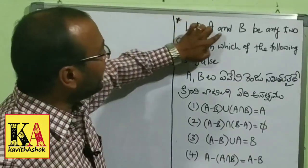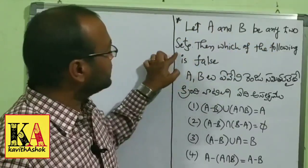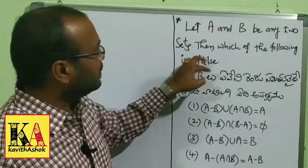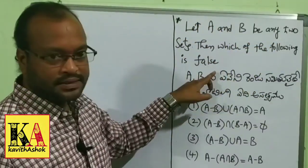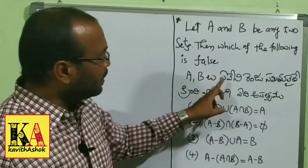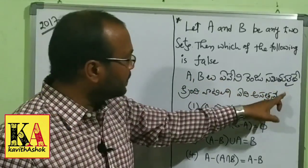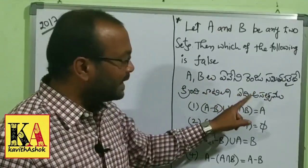Let A and B be any two sets. Then, which of the following is false? If you have a question related to A and B, identify what is false.